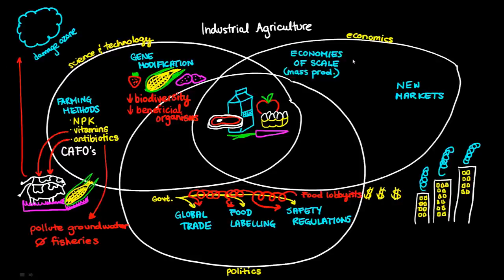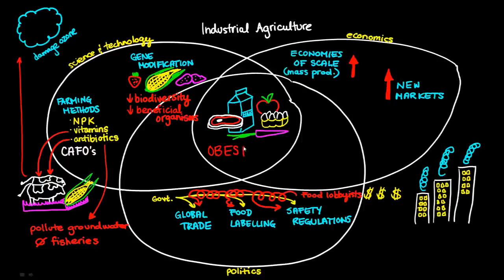Looking at the economics, industrial agriculture has been successful in producing large amounts of food and achieving more available goods. If you measure quality of life in terms of available goods, then yes, quality of life has improved. But if we also look at the aggressive marketing to consumers and the increase in portion sizes, one of the biggest consequences is the obesity epidemic — plaguing not just the United States, but around the world in developed countries where industrial agriculture is employed. Obesity is one of the side effects that follows quickly.